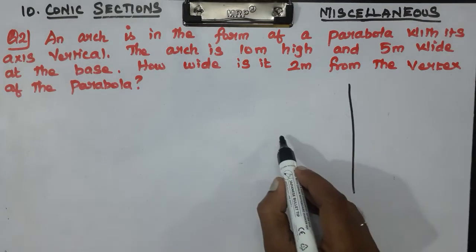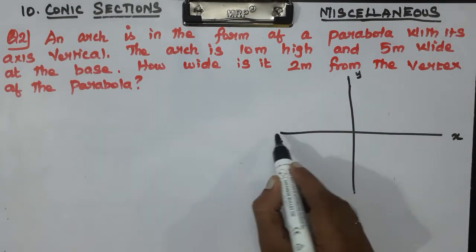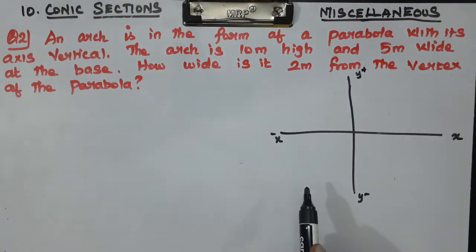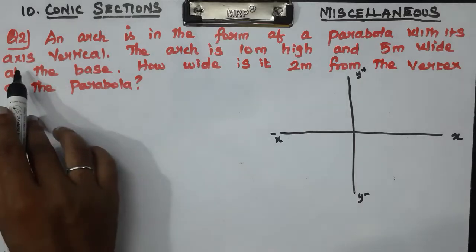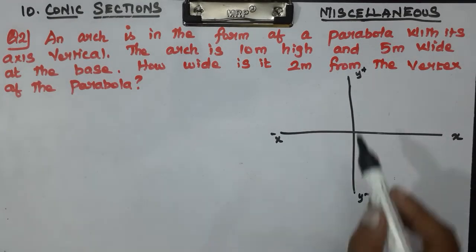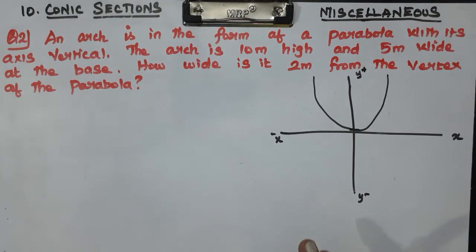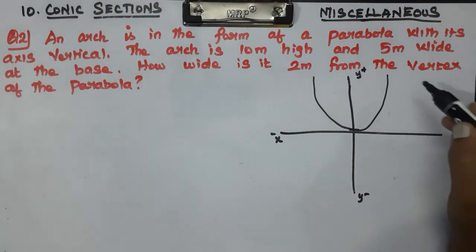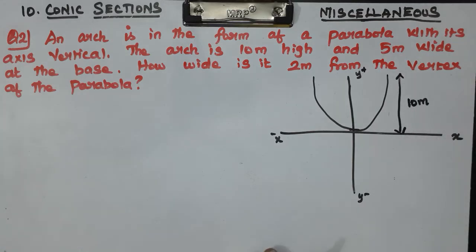Now I'll draw a parabola. This is the X-axis and this is the Y-axis. We will form an arc — the shape of a parabola is parabolic, like this, with vertical axis. Here you will see.